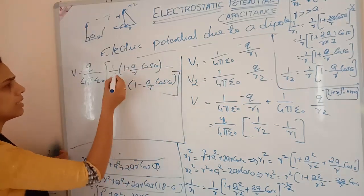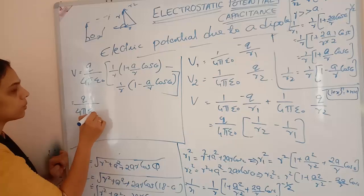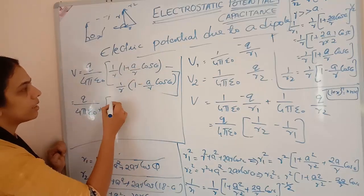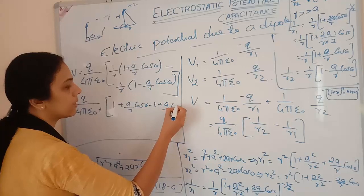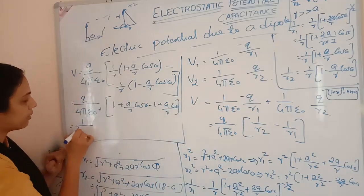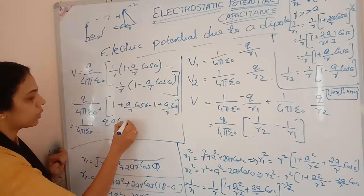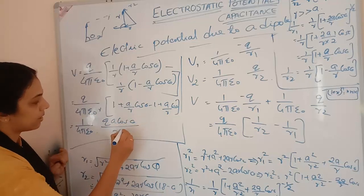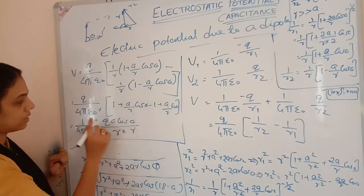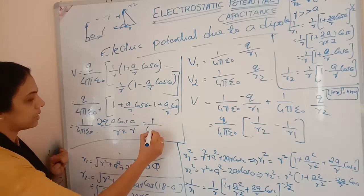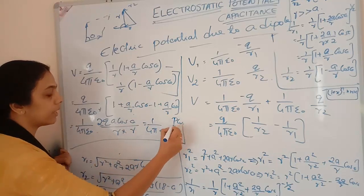Taking 1/r as common, V equals (q / 4πε₀r) times (1 + a/r cosθ − 1 + a/r cosθ), which simplifies to (1 / 4πε₀) times (q · 2a · cosθ) divided by r². Since p equals q × 2a, this gives V equals (1 / 4πε₀) times (p cosθ / r²).